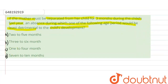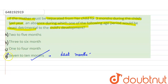So, definitely, the age period that will be least detrimental to the child would be 7 to 10 months. Because by the later months, the child will have developed a lot. So, if the separation happens at that time, it will be least detrimental. But if it starts at the very beginning, it will be much more detrimental to the child.